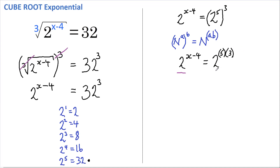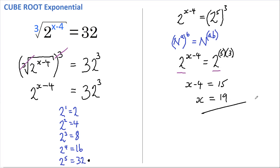And because both sides of the equation now have the same base, that means that the powers must be equal. So x minus 4 must equal 15, and if we add 4 to both sides we get x equals 19. And that's our answer.